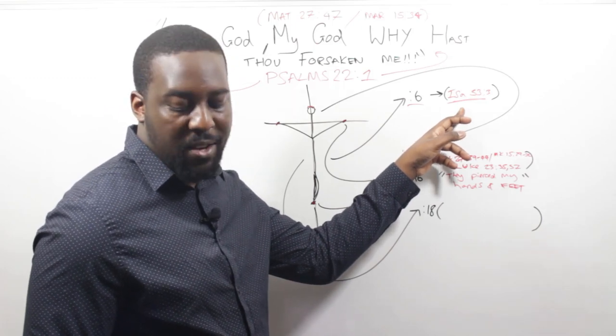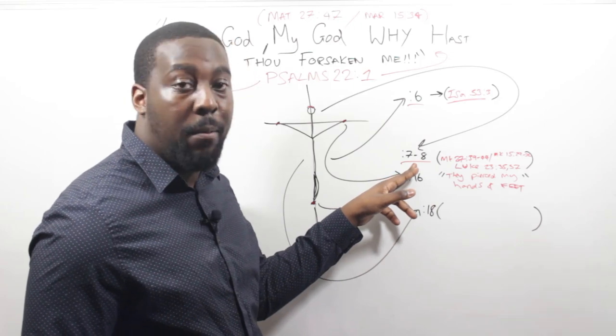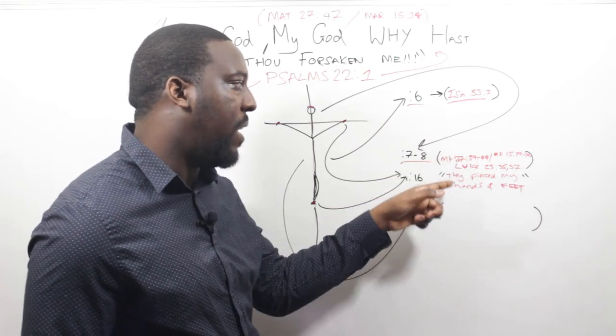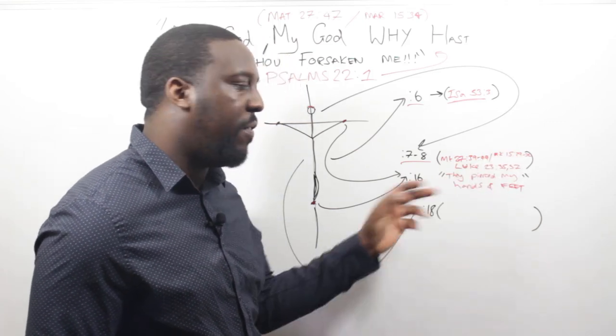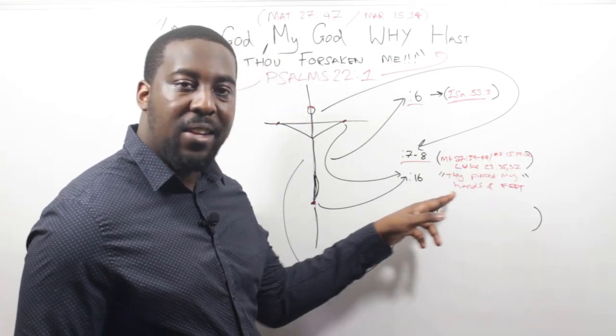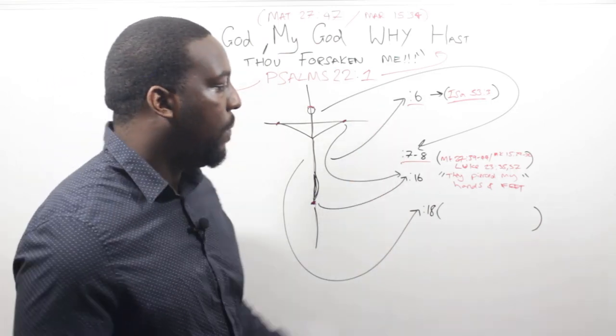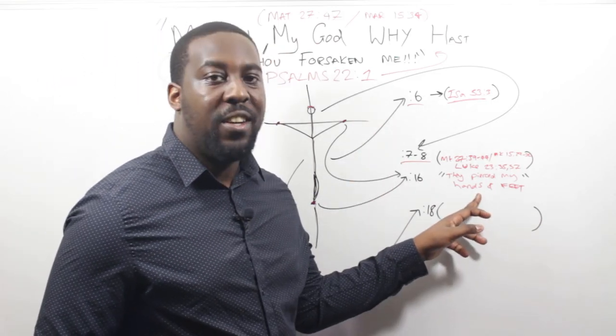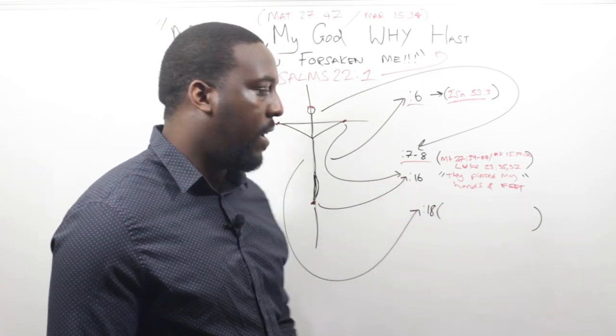He's rejected of the people, which is synonymous with Isaiah 53, another key scripture about the Messiah. They mock him. Compare those scriptures there in Matthew 27, 39 to 44, Mark 15, 29 to 32, Luke 23, verse 35 and 37. They pierced his hands and his feet. We already know crucifixion, hands and feet. Crucifixion didn't even exist at this point when the book of Psalms was written. So that's another thing.